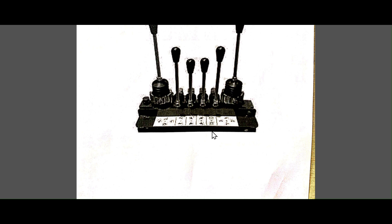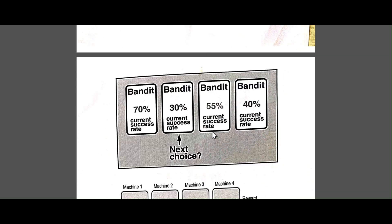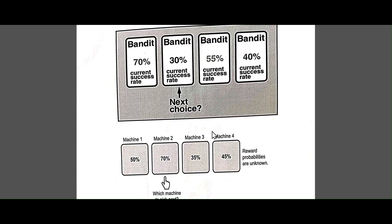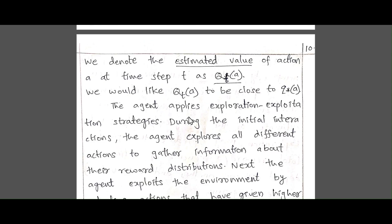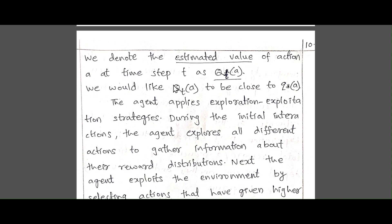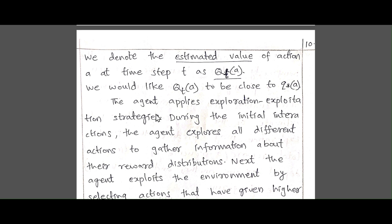This is another picture illustrating the multi-armed bandit problem. Sometimes it may occur 70%, sometimes 30%, 55%, or 40% — it is random, we don't know. We denote the estimated value of an action at a time step T as Q_t(a).